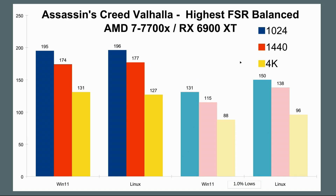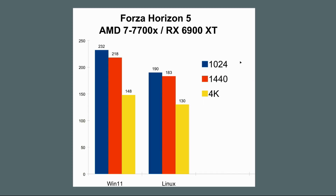Looking at the 1% lows: at 1080p, Windows has 131 but Linux has 150. At 2K, Windows has 115 and Linux has 138. At 4K, Windows has 88 and Linux has 96. One thing I've noticed with other people testing Linux gaming is that a lot of times the 1% lows are better in Linux than they are in Windows. The reality is they shouldn't be, because most of these games are using a compatibility layer. Imagine if the games were natively ported to Linux — and I do foresee a day where many game developers will be developing for both Windows and Linux.